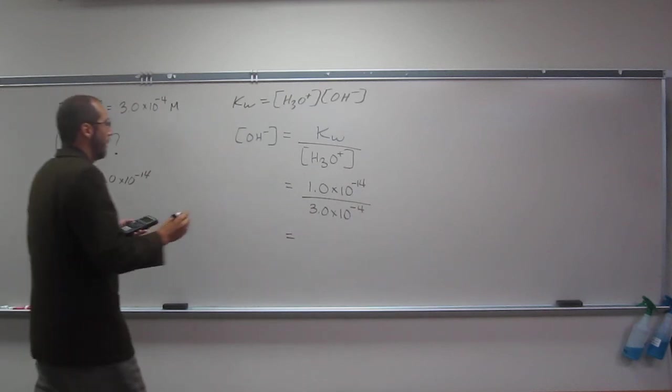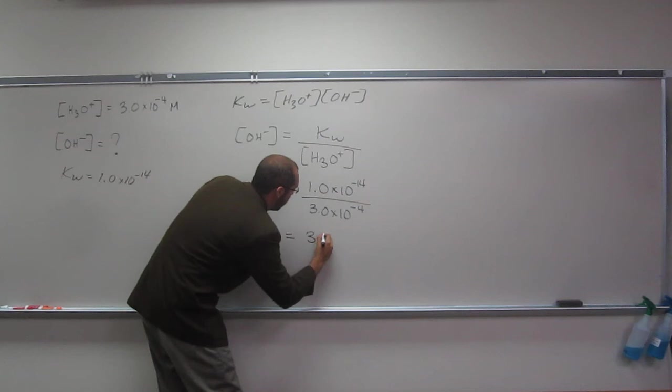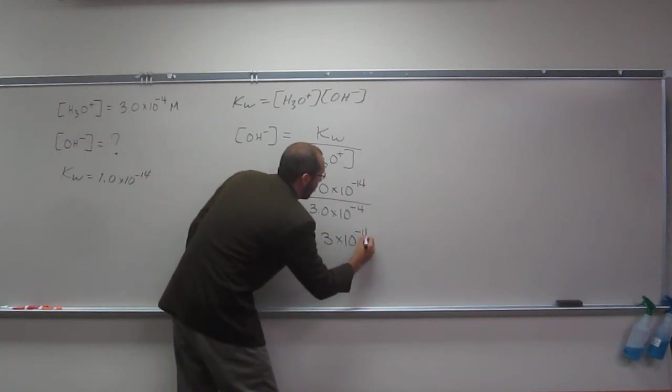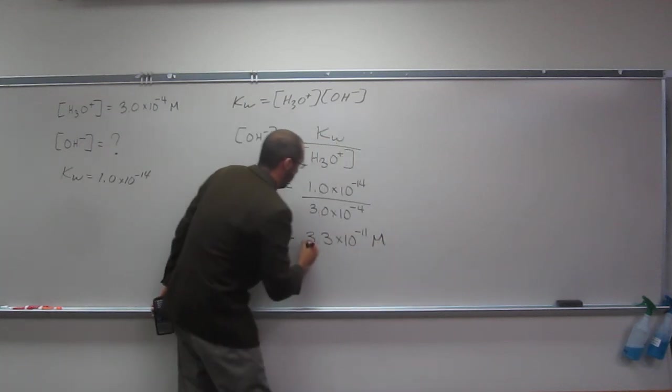Okay, yeah, so we get, well, to two sig figs, 3.3 times 10 to the negative 11th, and we have to remember now to put molar in there. Molar.